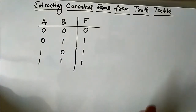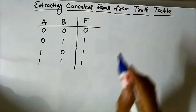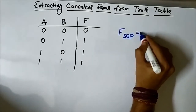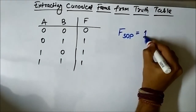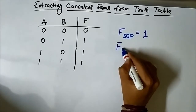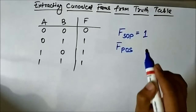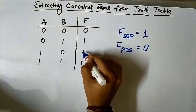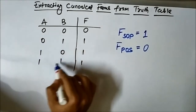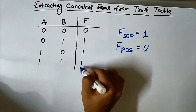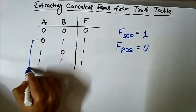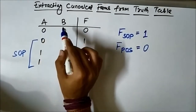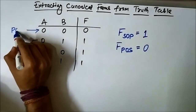The first important thing to remember when dealing with SOP and POS is that the SOP expression is applicable at those input combinations where the output is logic 1, and POS is applicable at those points where the output is logic 0. From the table, for input combinations 0 1, 1 0, and 1 1 the output is logic 1, so these three are applicable for SOP. Only at input combination A=0, B=0 is the output logic 0, so POS is applicable there.